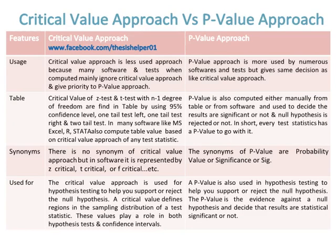The range of z-test and t-test for the critical value approach is the same. Critical values of z-test and t-test with n minus one degree of freedom are found in a table using the 95% confidence level for one-tail left, one-tail right, and two-tail tests. Many software packages like MS Excel, R, and Stata also compute table values based on the critical value approach, while p-values are computed either manually from a table or from software to decide whether results are significant.